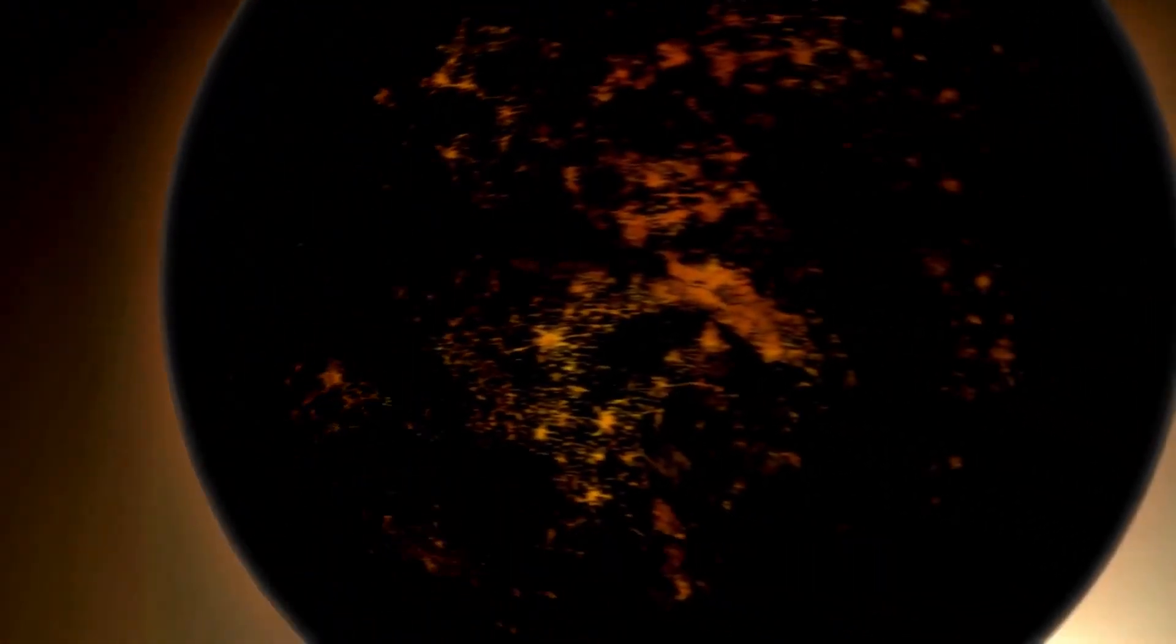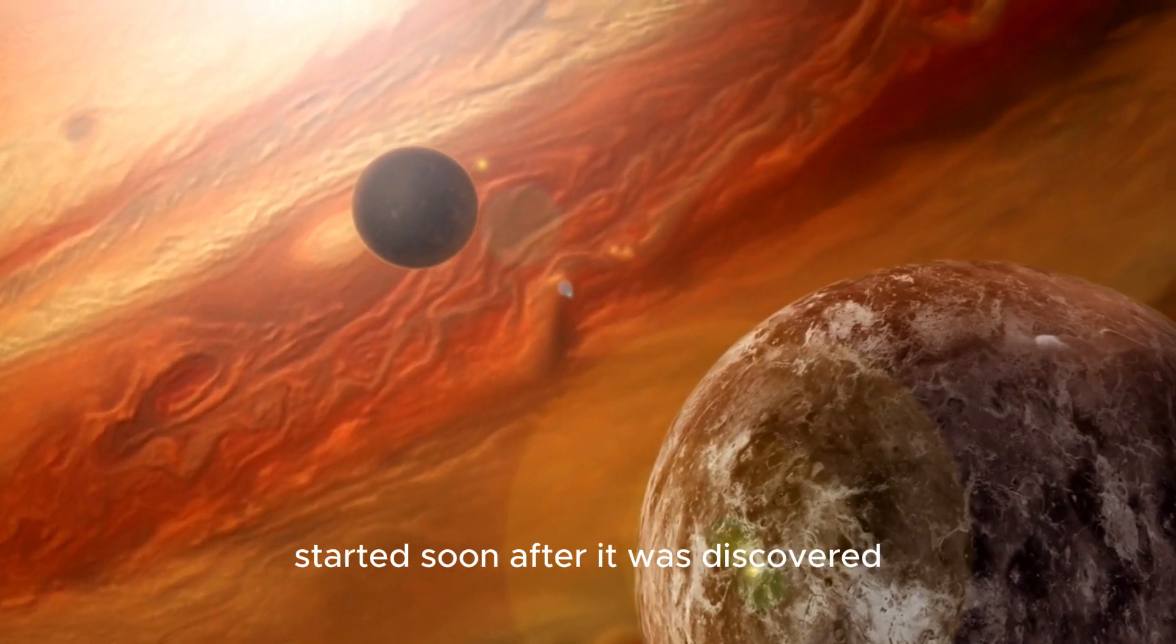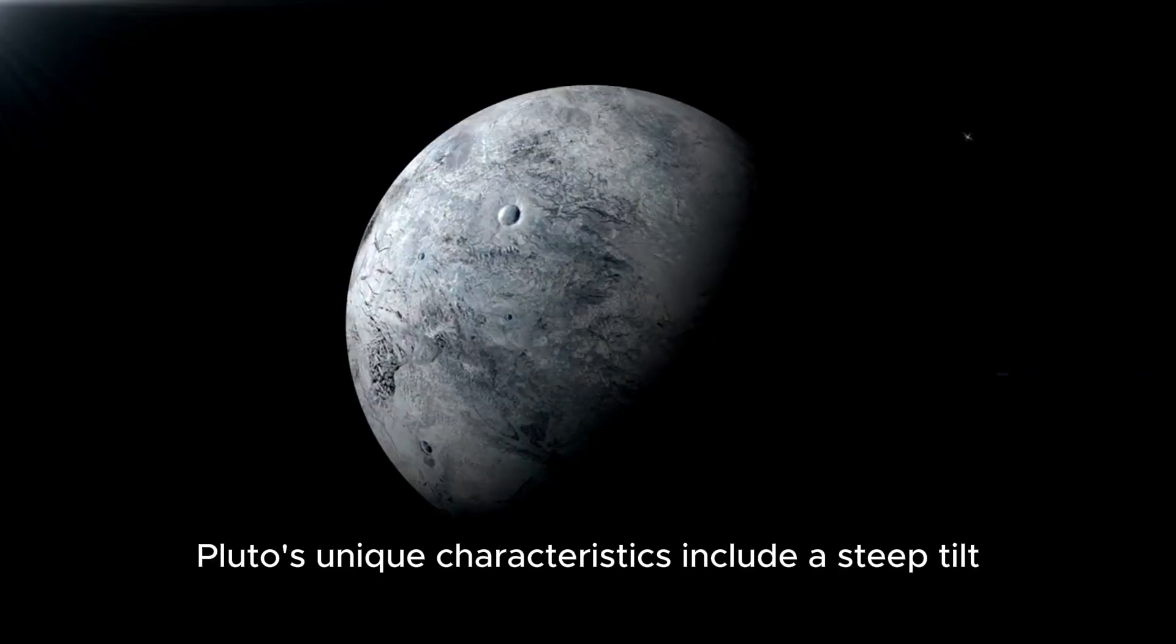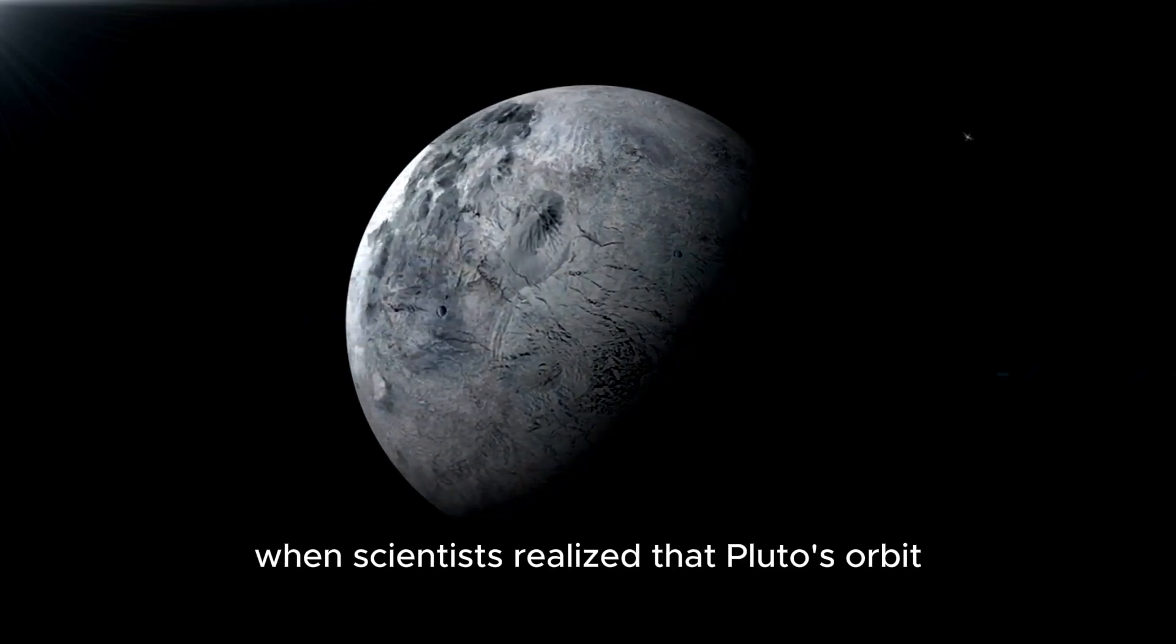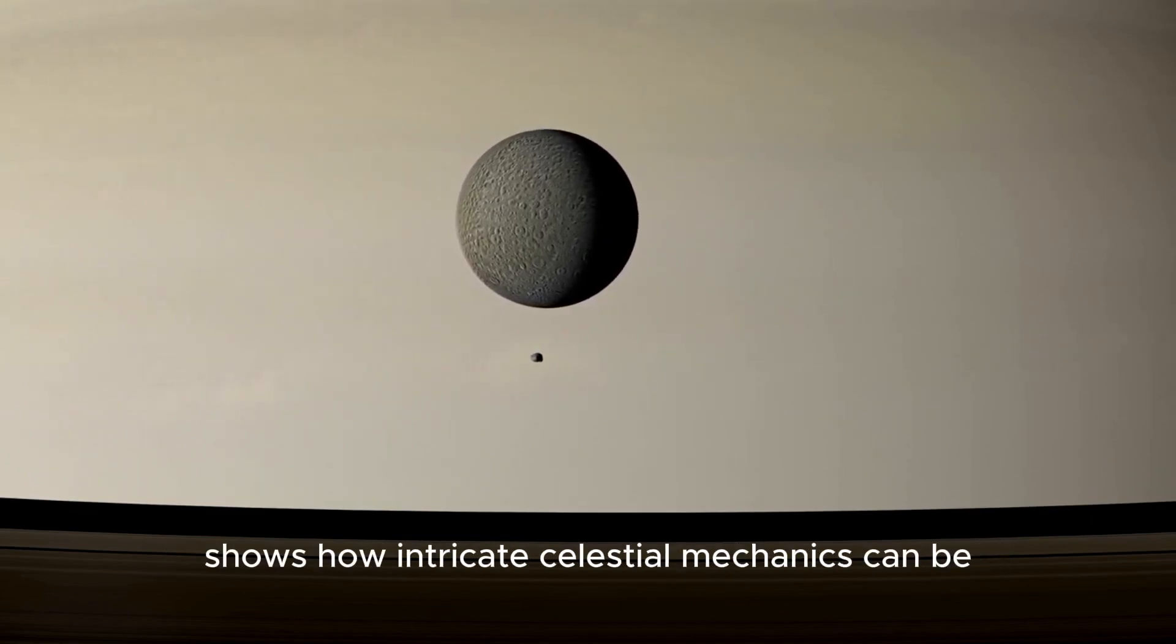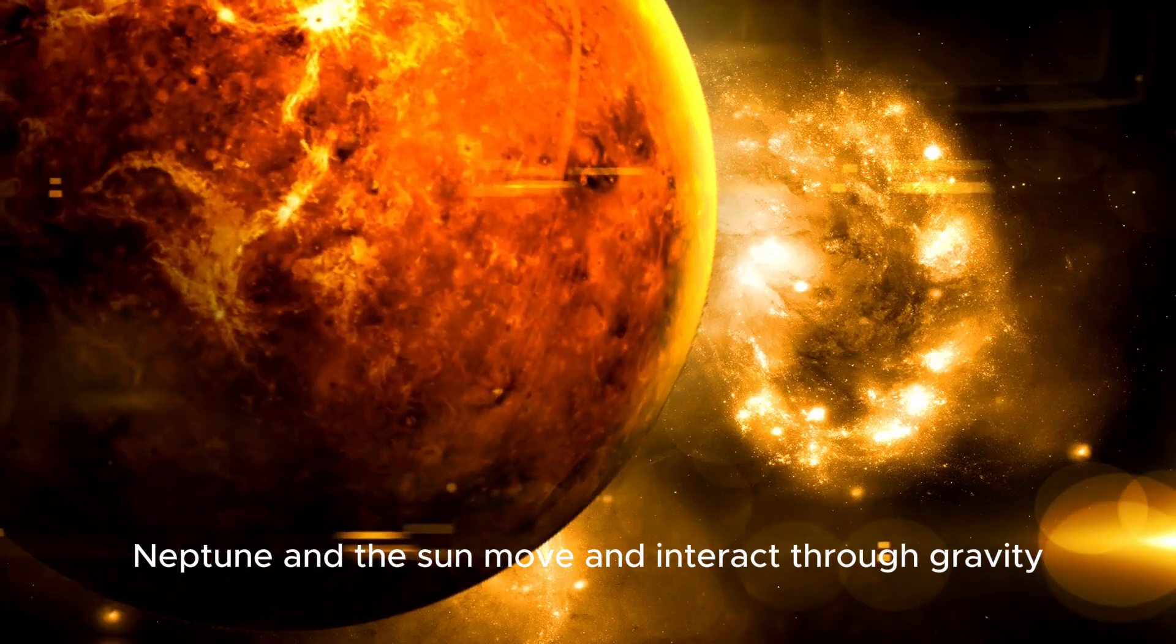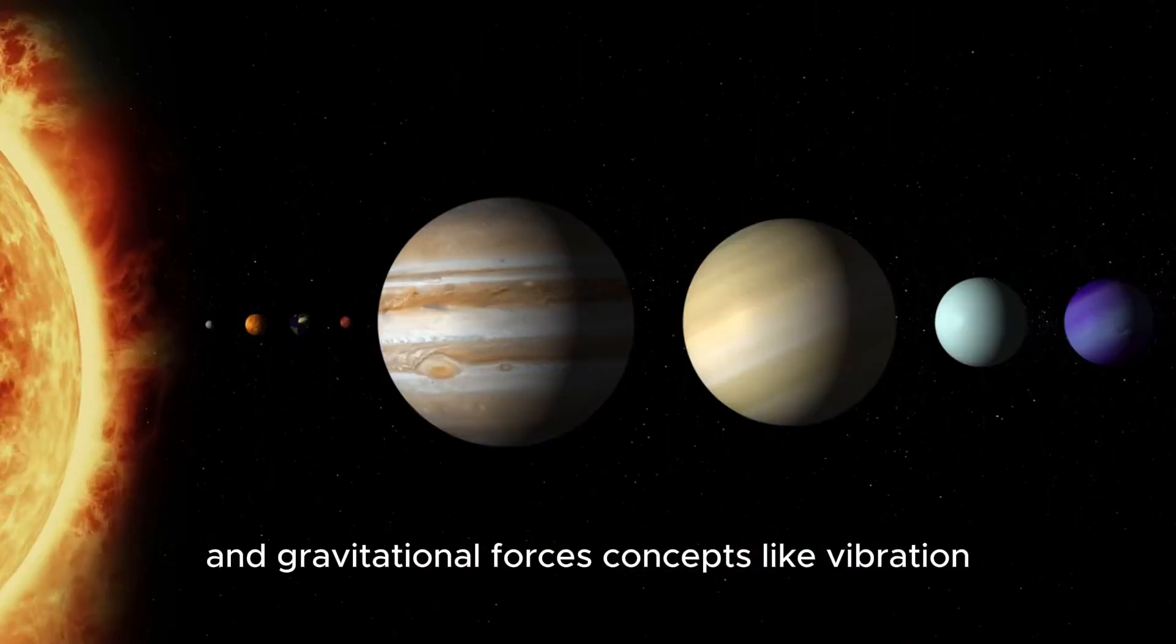So why hasn't a collision happened yet? The answer lies in the gravitational pull of other planets. The study of Pluto's orbit started soon after it was discovered, presenting a challenging puzzle for astronomers. Unlike most planets which have orbits that are nearly flat, Pluto's unique characteristics include a steep tilt and an elongated shape. The mystery deepened when scientists realized that Pluto's orbit intersects with Neptune's. The three-body problem in space involves understanding how three celestial bodies like Pluto, Neptune, and the Sun move and interact through gravity.